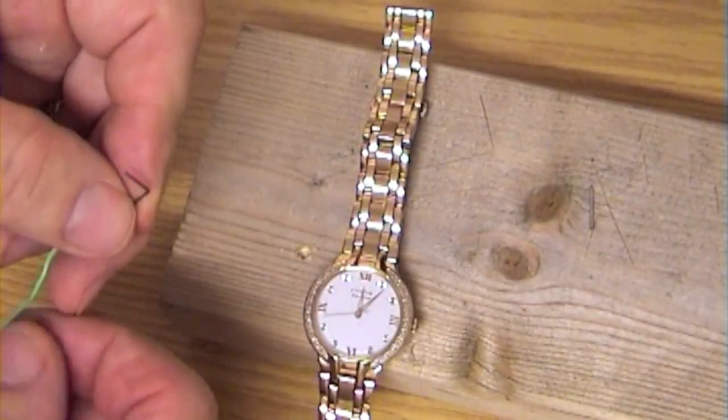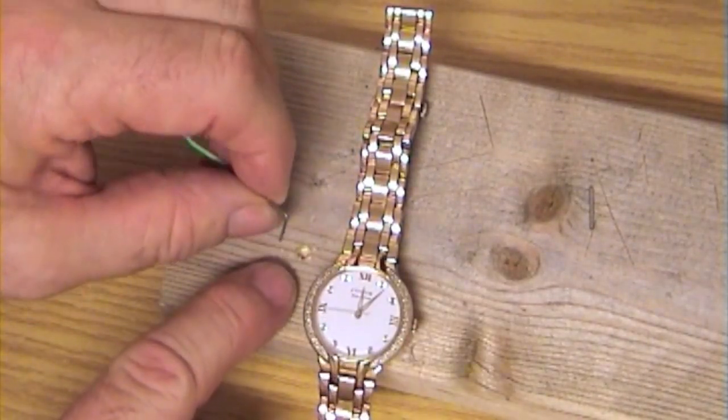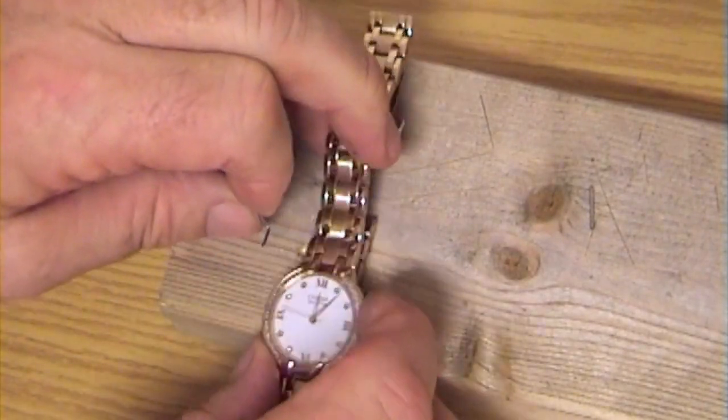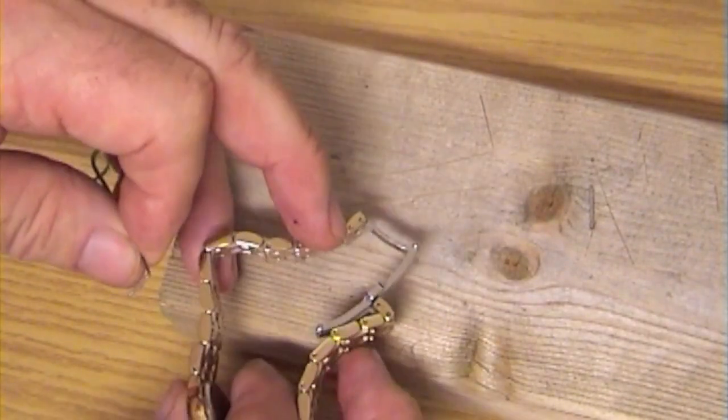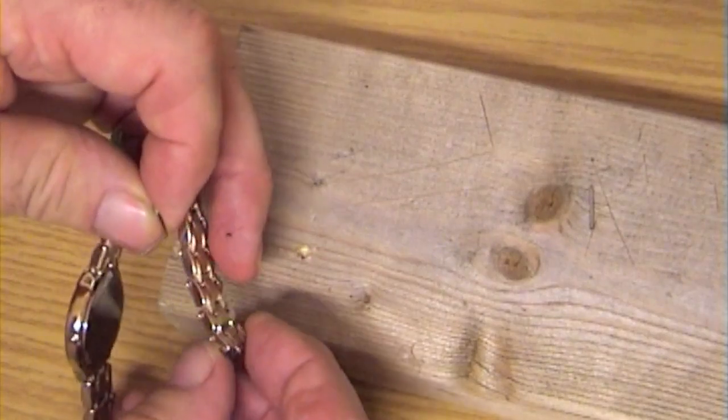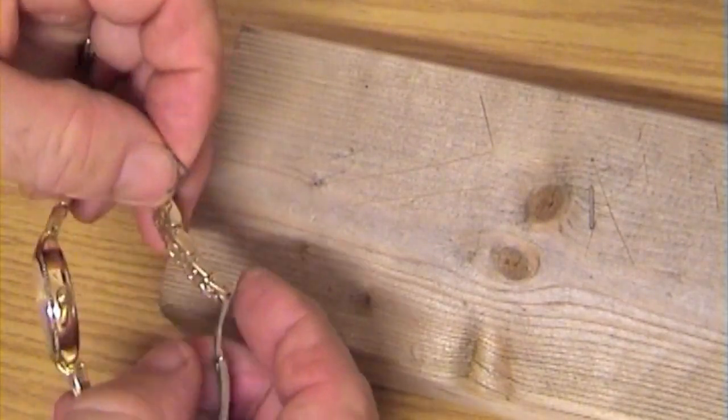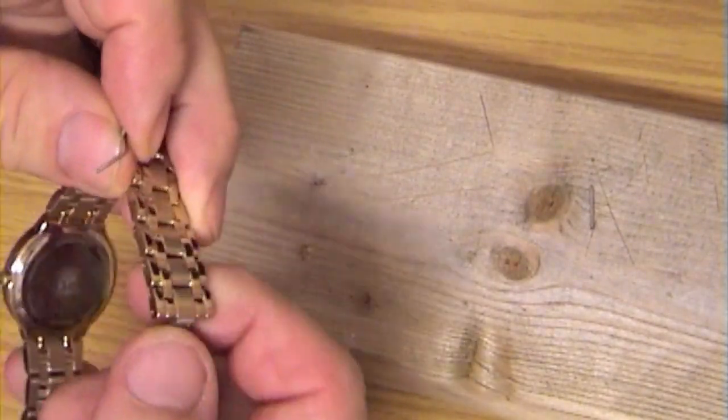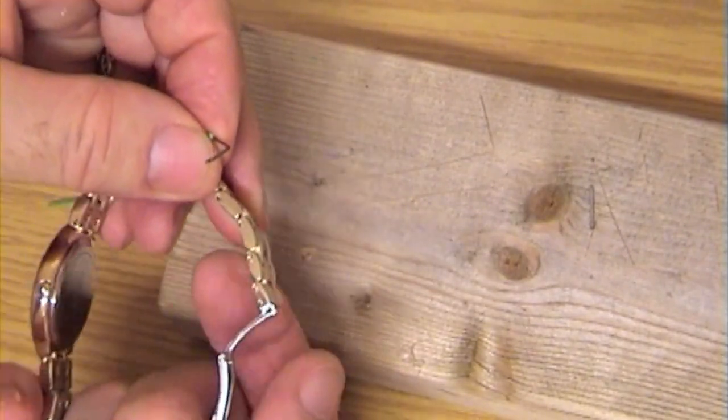And the way I decided to do this, is drill a hole in a piece of wood. Get your watch strap, place your watch strap in position. Remember the arrow? It shows you the way the pin comes out. The arrow's facing down.